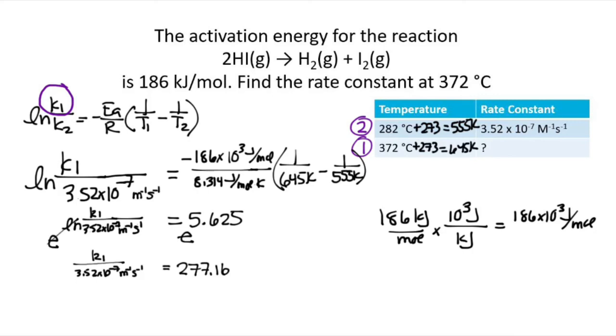So now in order to get K by itself, we just need to multiply both sides by 3.52 times 10 to the minus 7. And I get that K1 equals 9.756 times 10 to the minus 5. And that will have the same units as the other rate constant per molar per second.